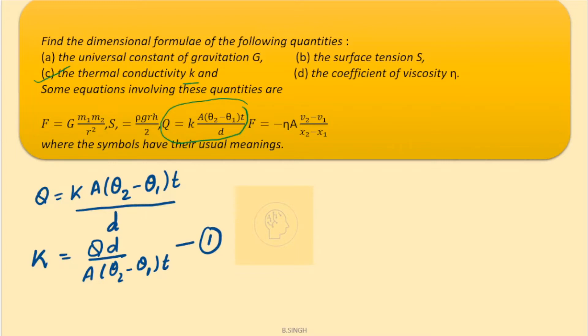Now, let us first introduce our dimensions of the known quantities. So, q is heat, heat here is a form of energy. So, that is m1, l2, t minus 2. This is the dimensions of energy.